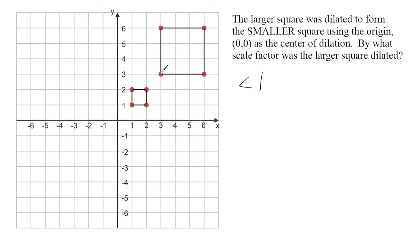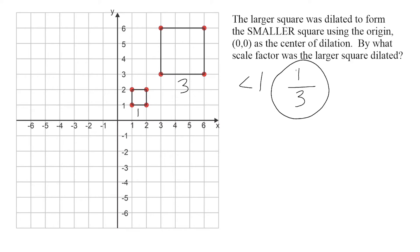For example, this side right here has a length of three and its corresponding side has a length of one. So we just take these two numbers and form a ratio. We're going to put the smaller number on top, which is one, and the larger number on the bottom, which is three. The only reason we did that is because we know we're shrinking our shape down, and whenever you shrink something down your scale factor is going to be less than one. So we already figured out what the scale factor is — it is one third.